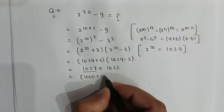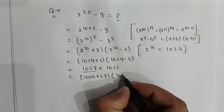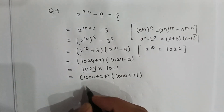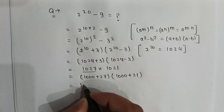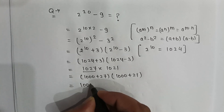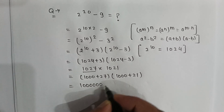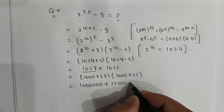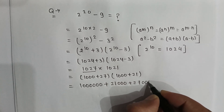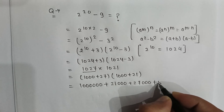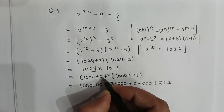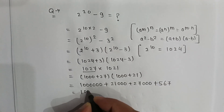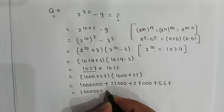This can be written as (1000 plus 27) multiplied by (1000 plus 21). If we apply the distributive law, then it will be 1,000,000 plus 21,000 plus 27,000 plus 567, when we multiply 27 with 21.